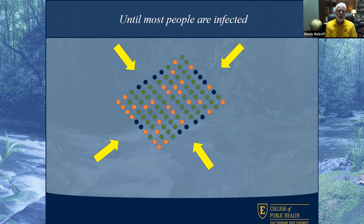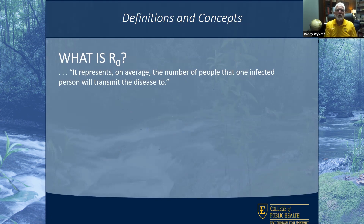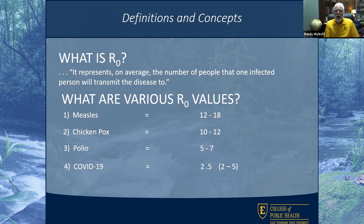How fast a disease spreads and how many people get exposed are different for different diseases. You may have heard of a concept called R-naught. R-naught represents the number of people that one infected person will transmit the disease to. If one person spreads it to one person who spreads it to one, you're not getting much expansion. But if one person can infect 10, and those 10 each infect 10, it grows very quickly. Diseases like measles and chickenpox spread very rapidly. Polio is sort of middle of the ground. COVID-19 has an R-naught of about 2.5 — the CDC uses 2.5, with estimates ranging from 2 to 5 — meaning on average between 2 and 3 people will get infected for each person who has COVID-19. Ebola is a little less than that.